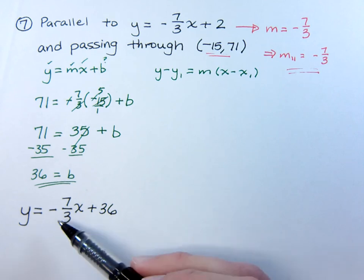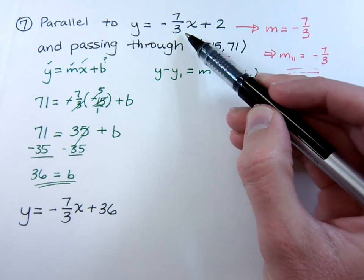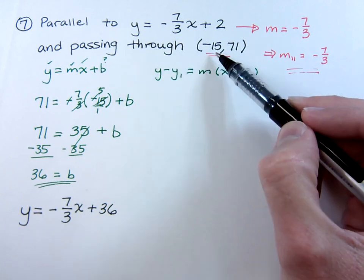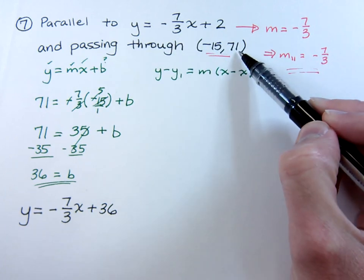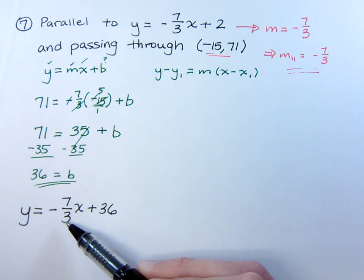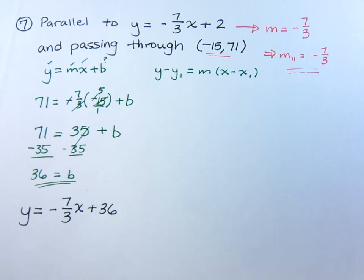As you can see, this guy is going to be parallel to the equation we want to be parallel to, and it will pass through the point negative 15, 71. Just plug in the negative 15, and then you're going to add this and you're going to end up with 71.